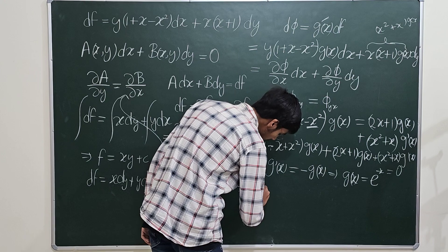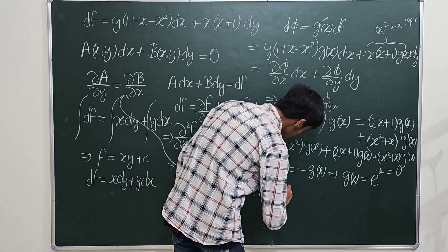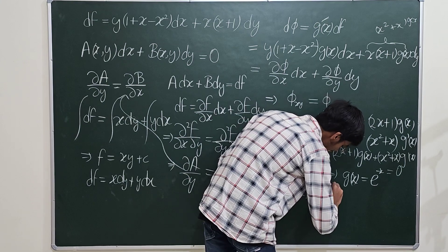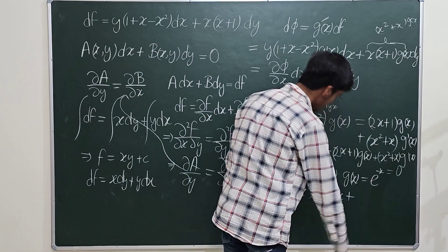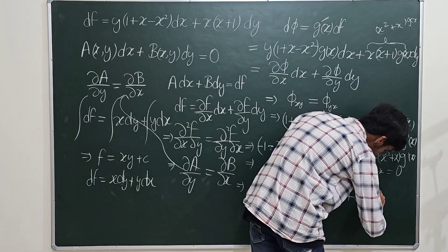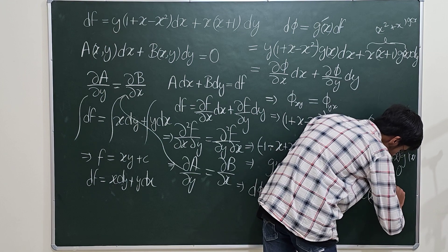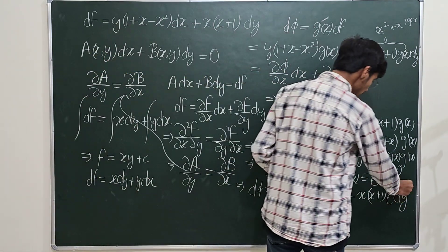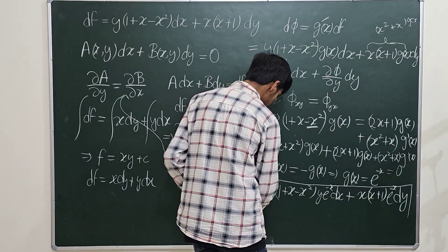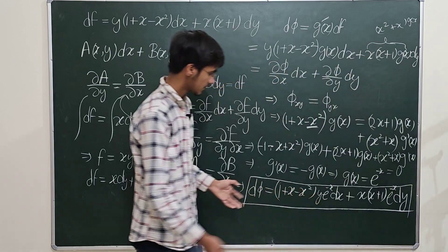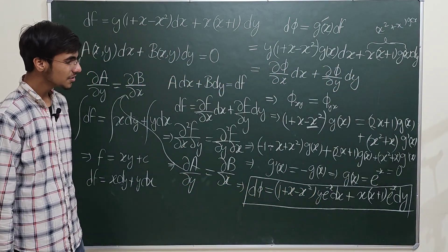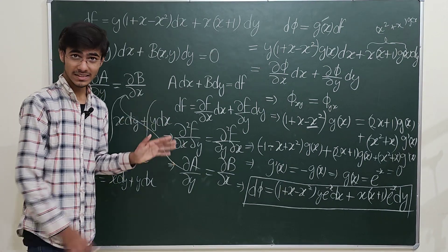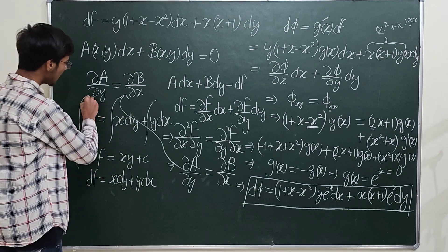With the integrating factor e^(−x), the exact differential dΦ becomes: (1 + x − x²)y e^(−x) dx plus x(x+1) e^(−x) dy. This exact differential can now be integrated directly to give a function Φ.